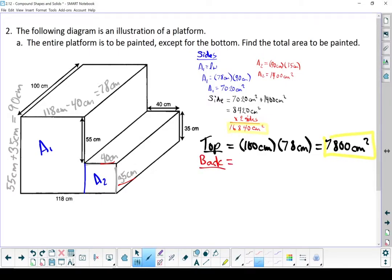If we do the back, we're looking at 90 centimeters tall by 100 centimeters wide. That is 9,000 square centimeters. We're also coming back for that number.